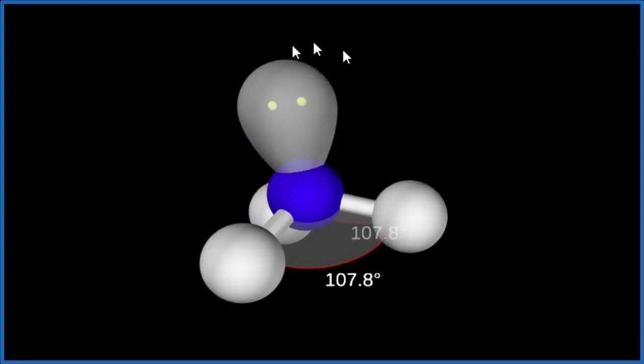That's because this lone pair occupies more space. Because it occupies more space, it's pushing the hydrogen atoms down further, and they're closer together. Our bond angle now for NH3 is 107.8 degrees.